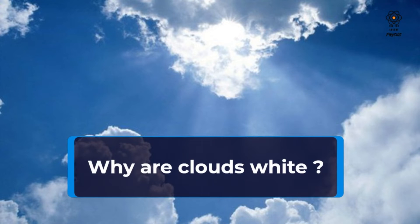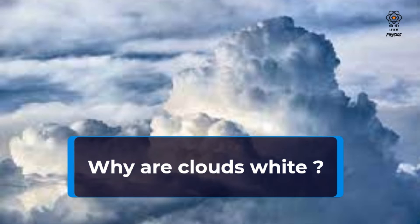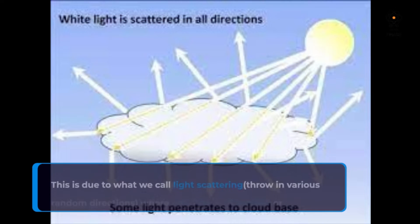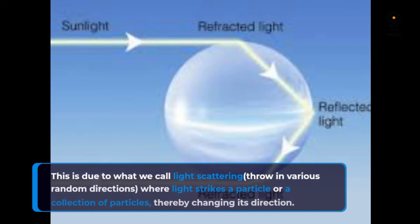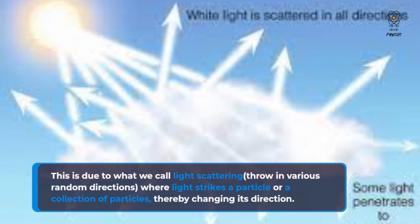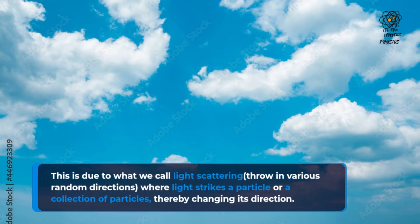Why are clouds white? This is due to what we call light scattering, where light strikes a particle or a collection of particles, thrown in various random directions, thereby changing its direction.